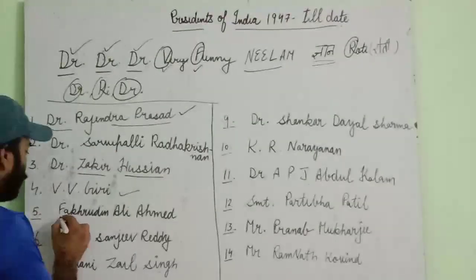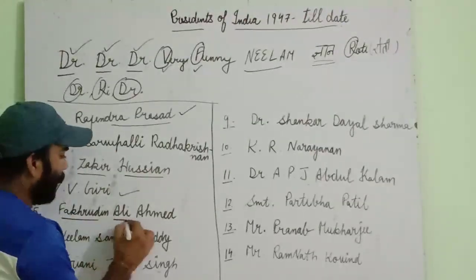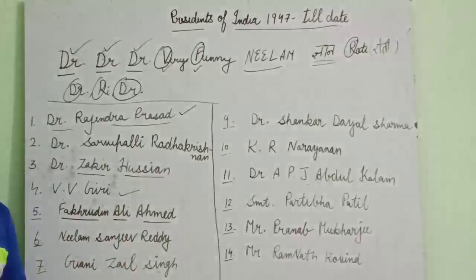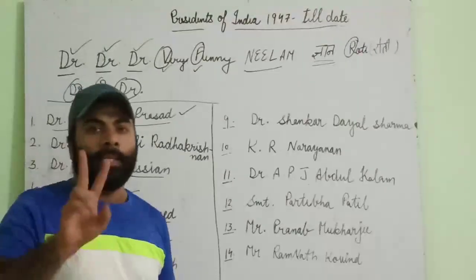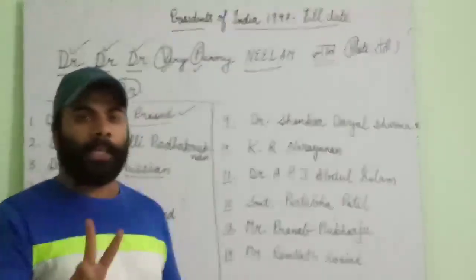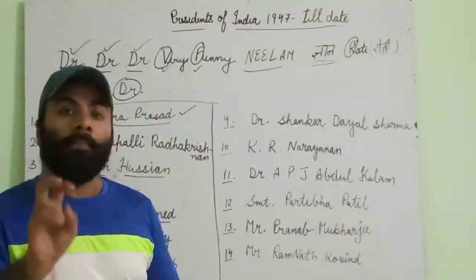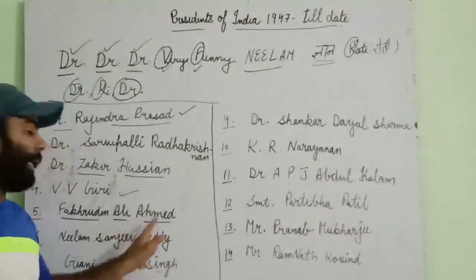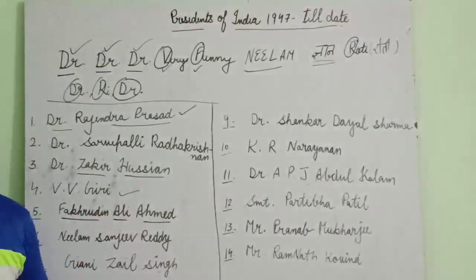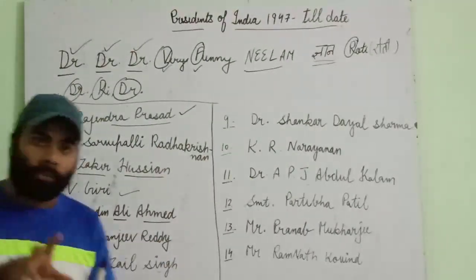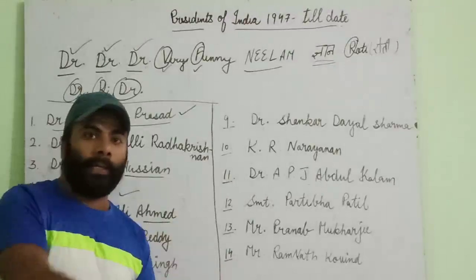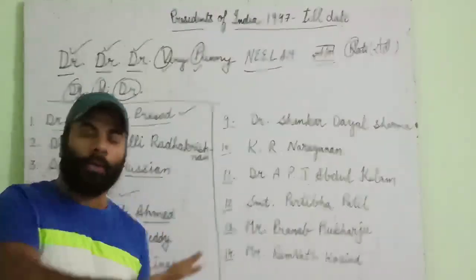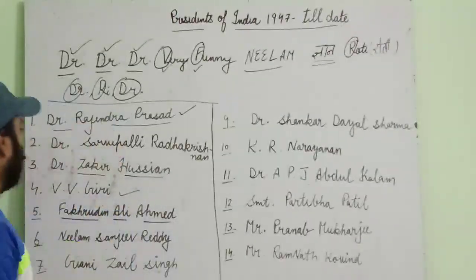Next is 'F' for Fakhruddin Ali Ahmed, the fifth president of India. He was the second Muslim president of India. Like Dr. Zakir Hussain, Fakhruddin Ali Ahmed also died in office while serving as president.